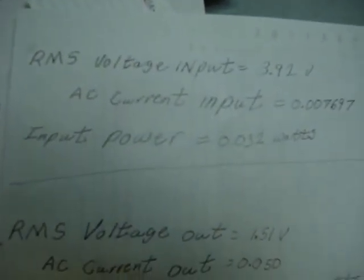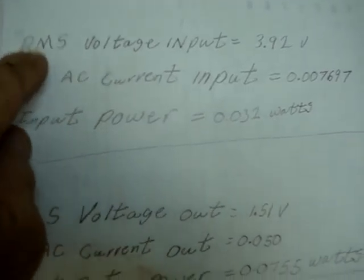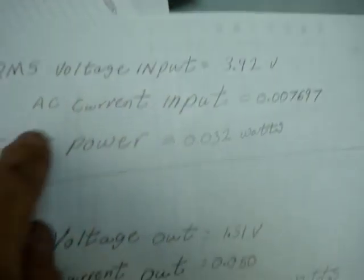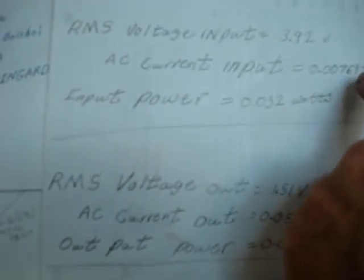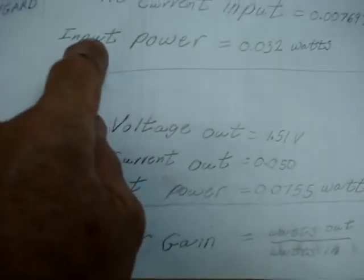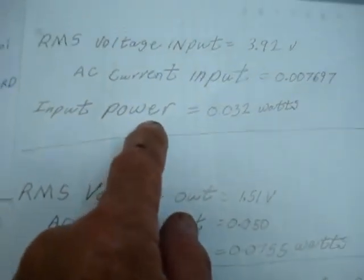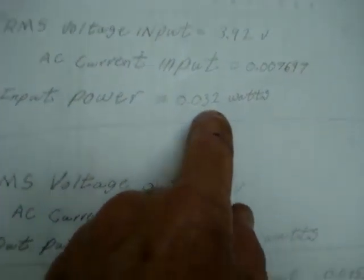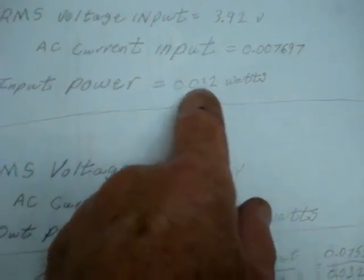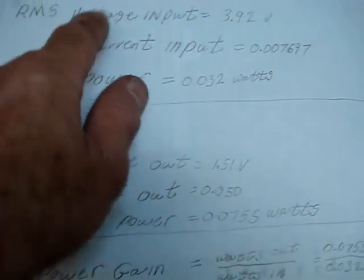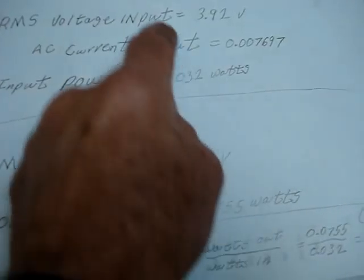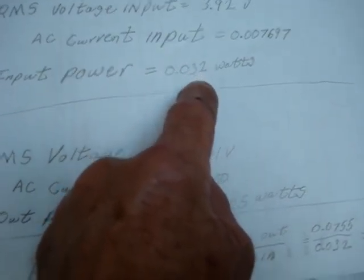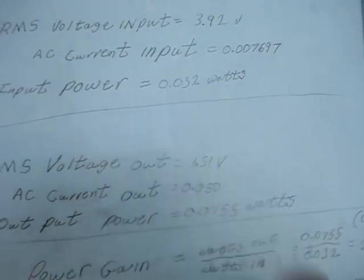My RMS voltage 3.92 input, AC current 0.07697. I calculate the input power which is my RMS voltage times my current, which comes out to be about 0.032 watts.